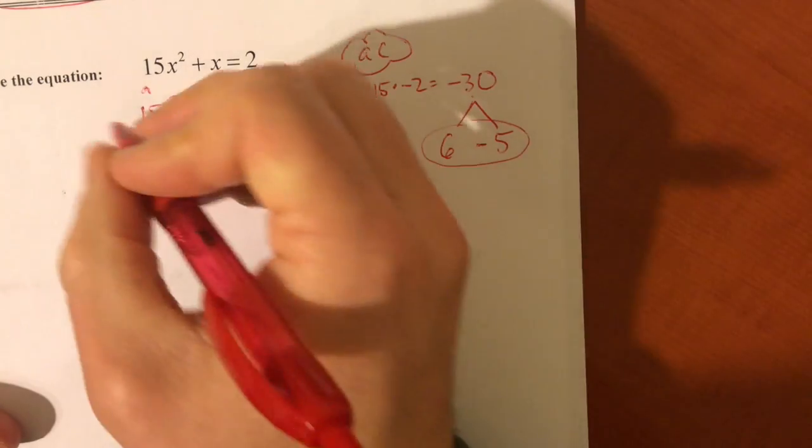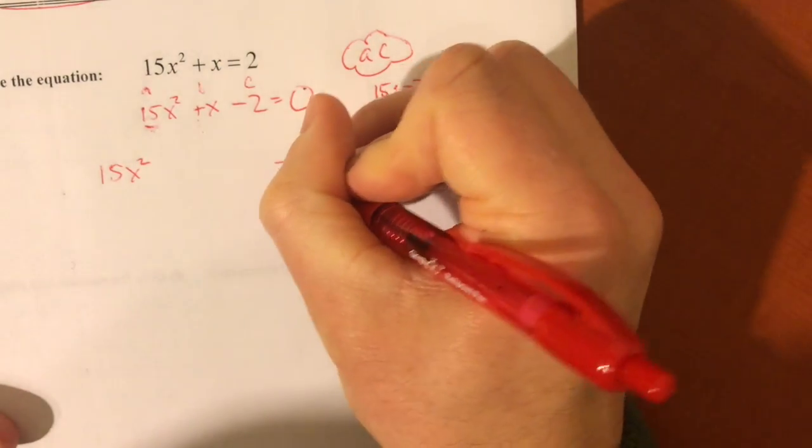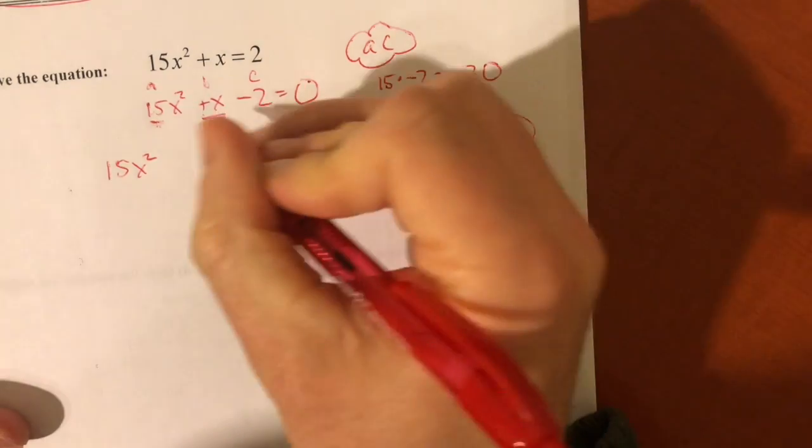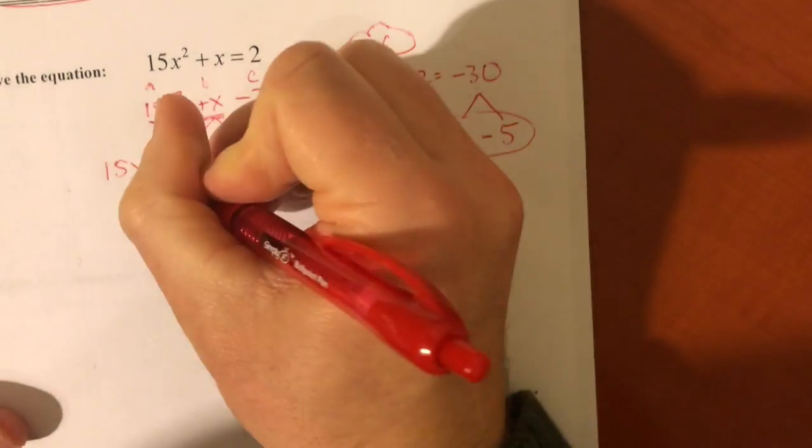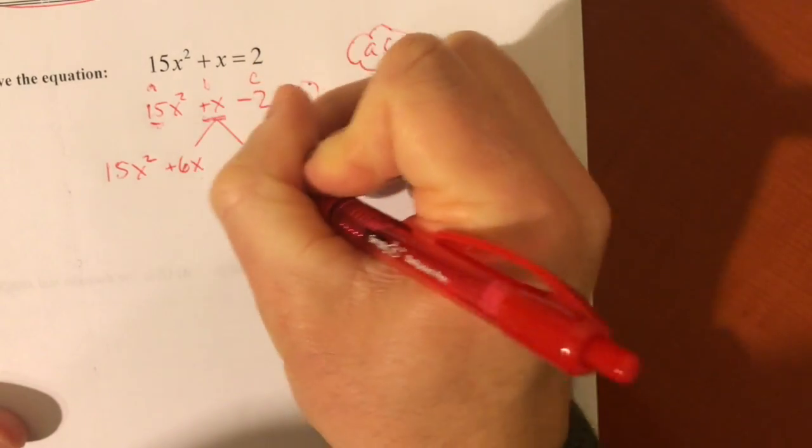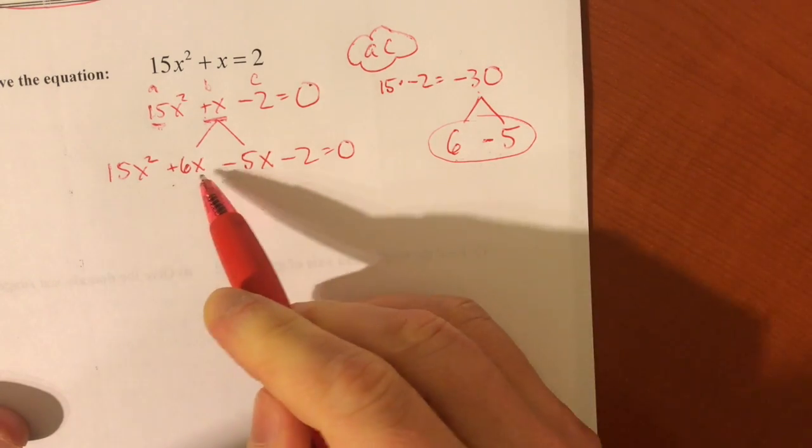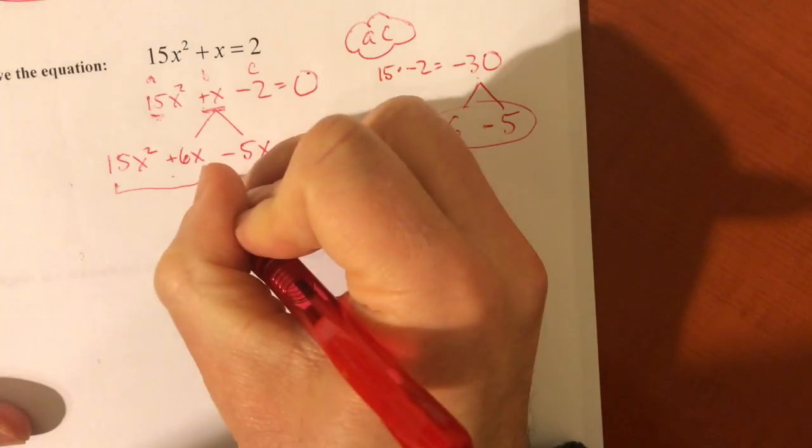But remember, what we do with them is you keep the first and last term the same. You're just going to rewrite this positive x in the middle using those two numbers. So I'm going to rewrite, instead of positive x, I'm going to write plus 6x minus 5x. So using those two numbers, plus 6x minus 5x adds up to x. And then I'm going to factor by grouping.